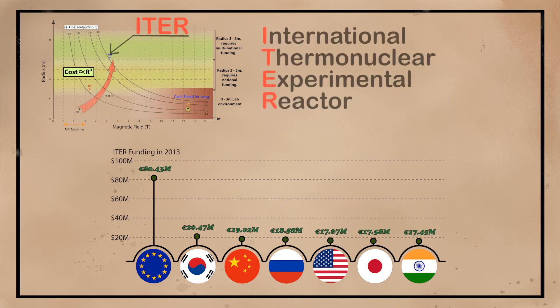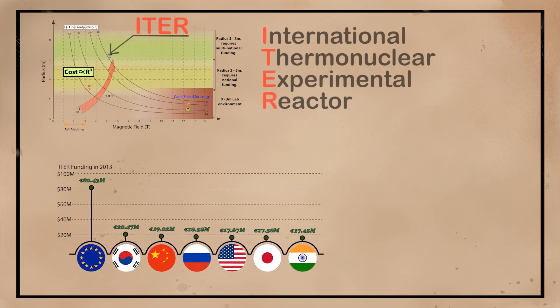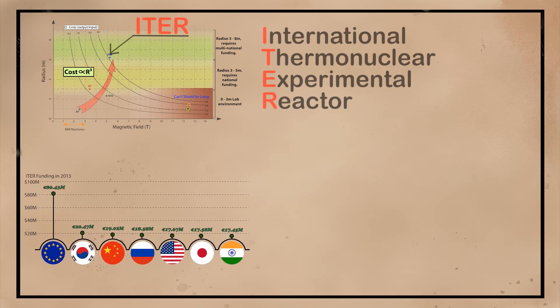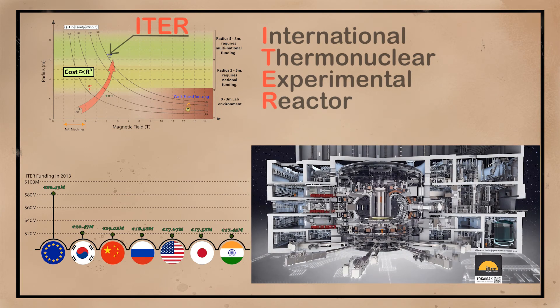ITER's purpose is to achieve a Q of 10 and to demonstrate that fusion technology is feasible. A Q of 10 would mean that it outputs 10 times more energy than it consumes. ITER is based on the tokamak design, which means it uses magnetic confinement to achieve high Q gains. However, ITER will not use the new superconductor, so in some ways by the time ITER is finished, the design may already be outdated.